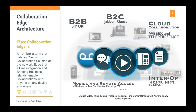Finally, Cisco Collaboration Edge also covers mobile and remote access. It allows VPN-less access of Jabber or TC endpoints from outside the enterprise through the internet, enabling registration and use of all enterprise collaboration services without the need for a VPN client to be installed on the Jabber client or TC endpoints.